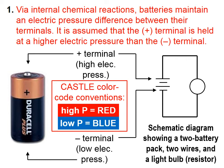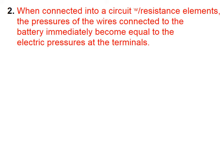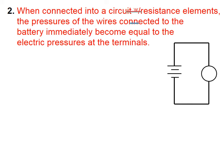The CASEL color code conventions are that high pressure is given a red color, and low pressure is a blue color. So this positive terminal is under a high electric pressure, and this negative terminal is assumed to have a low electric pressure. When connected into a circuit with resistance elements, the pressures of the wires connected to the battery immediately become equal to the electric pressures at the terminals.